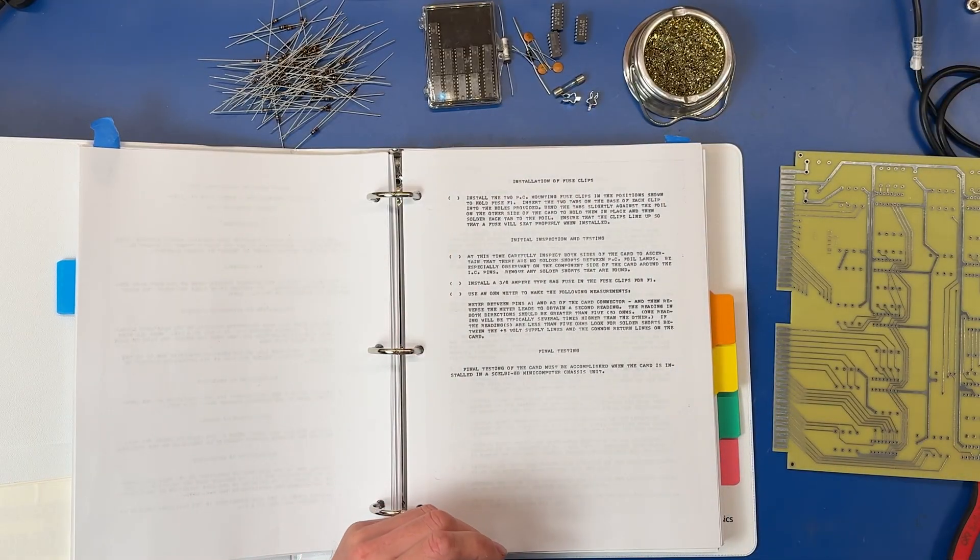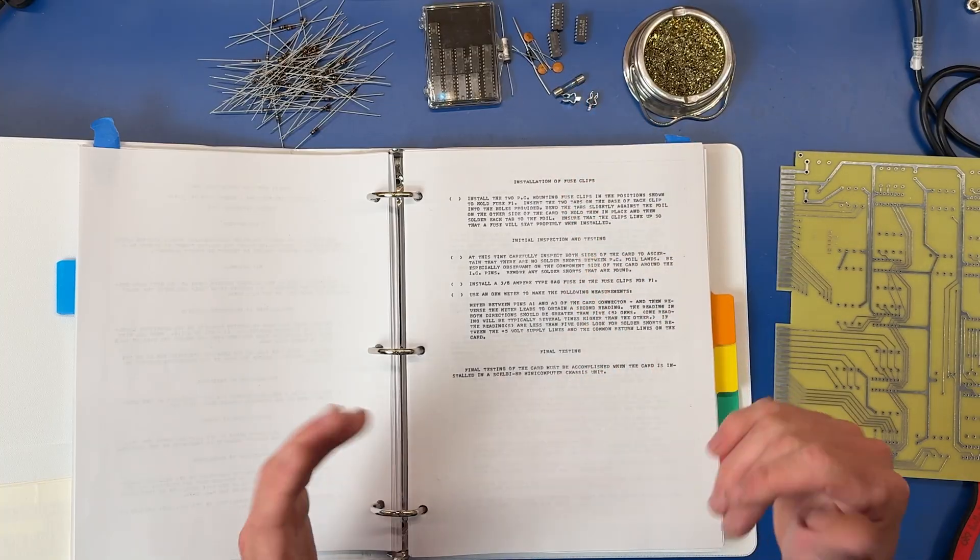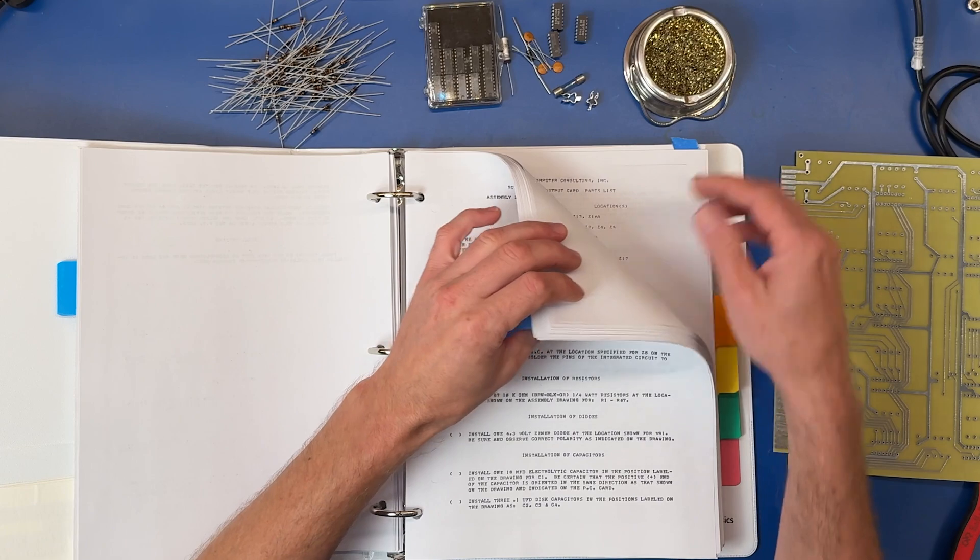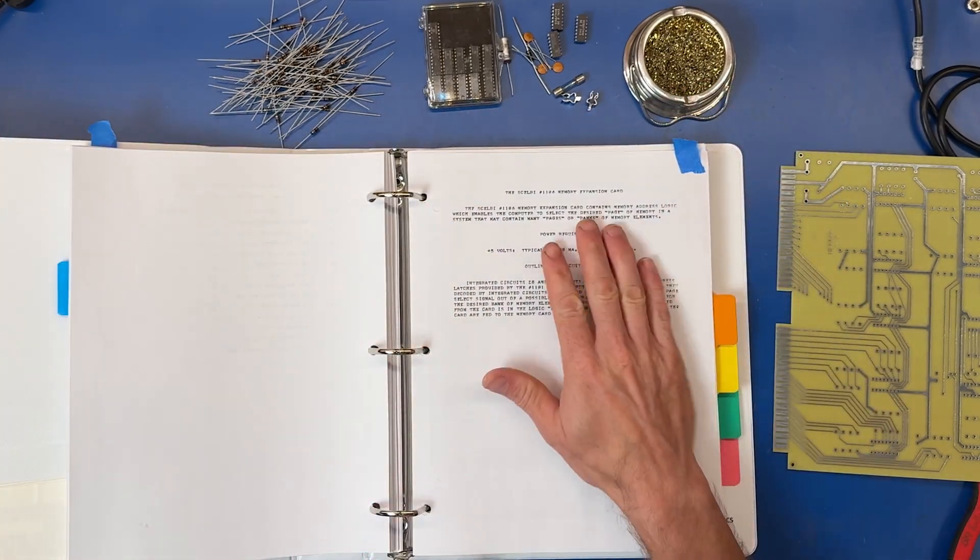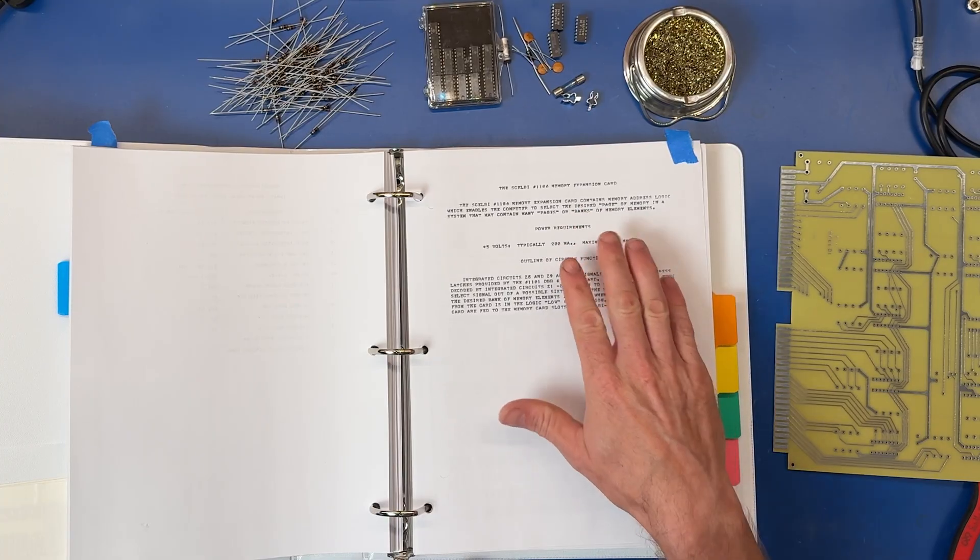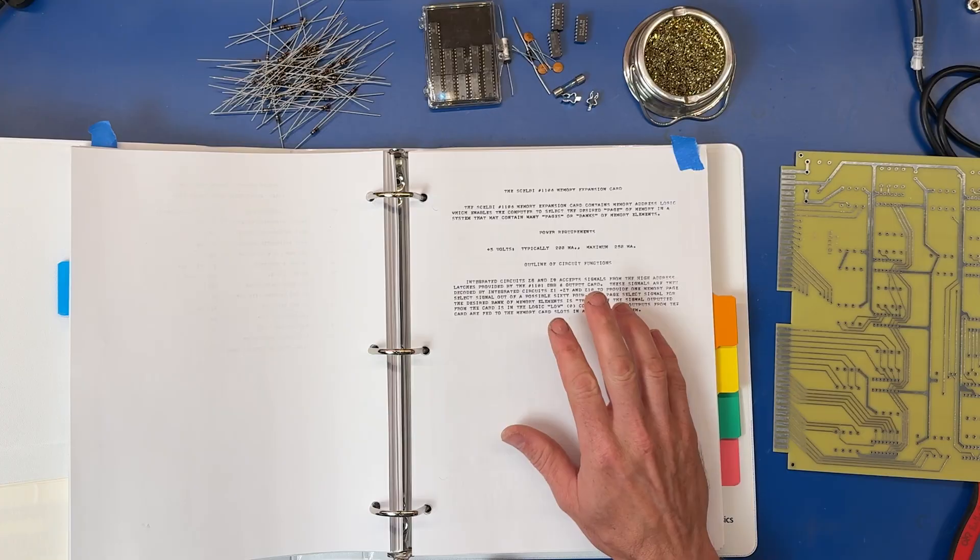I'm going to set it to the side here for a little bit. Fuse clips and the fuse, and final inspection and testing. In the back of the manual here where we have the details for each board of the computer, we have the one for the expansion card. Power requirements: maximum 250 milliamps.